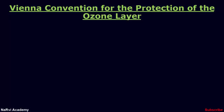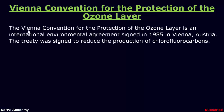In this presentation, I am going to explain what is the Vienna Convention for the Protection of the Ozone Layer. The Vienna Convention is an international environmental agreement signed in 1985 in Vienna, Austria. The treaty was signed to reduce the production of chlorofluorocarbons, which were the main chemical agents depleting the ozone layer, resulting in an increased threat of skin cancer.